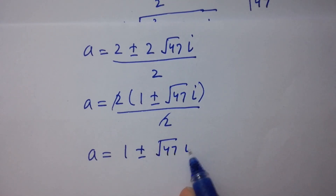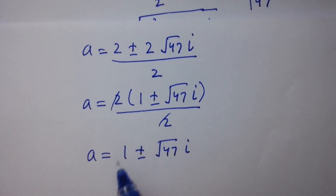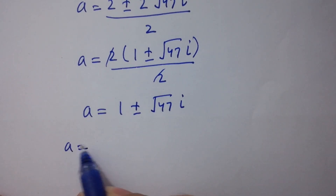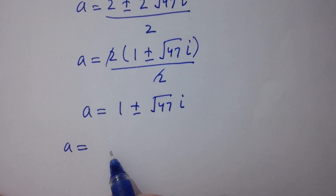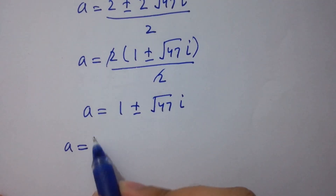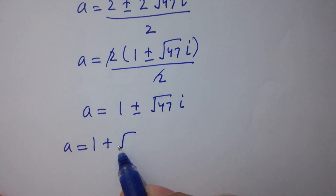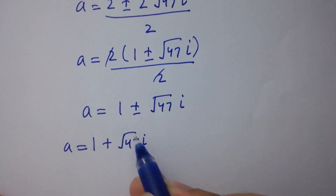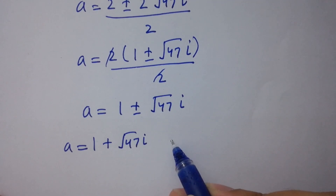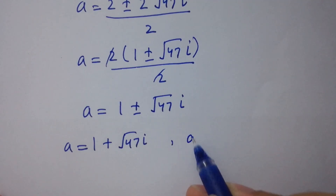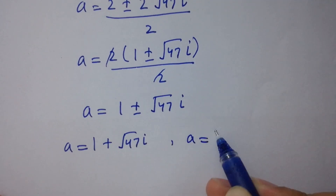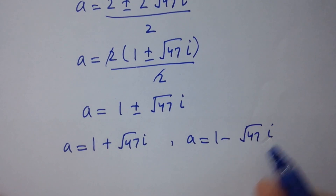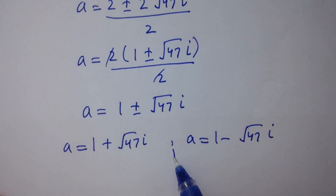So we have a equals either 1 plus square root of 47·i, or a equals 1 minus square root of 47·i.